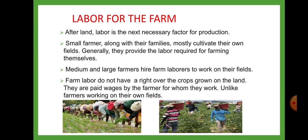Today we first start with the labor for the farm. We have learnt labors are of two types: skilled and unskilled labors. In a farm activity, there is need for unskilled labor. Therefore, after land, labor is the next necessary factor for production.